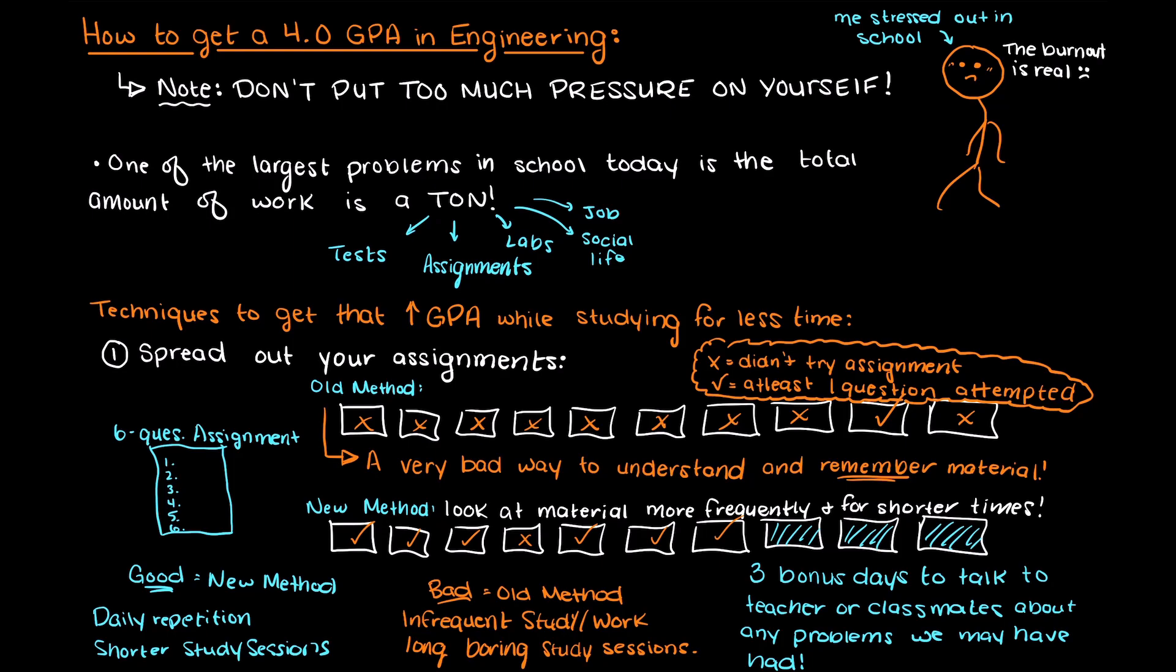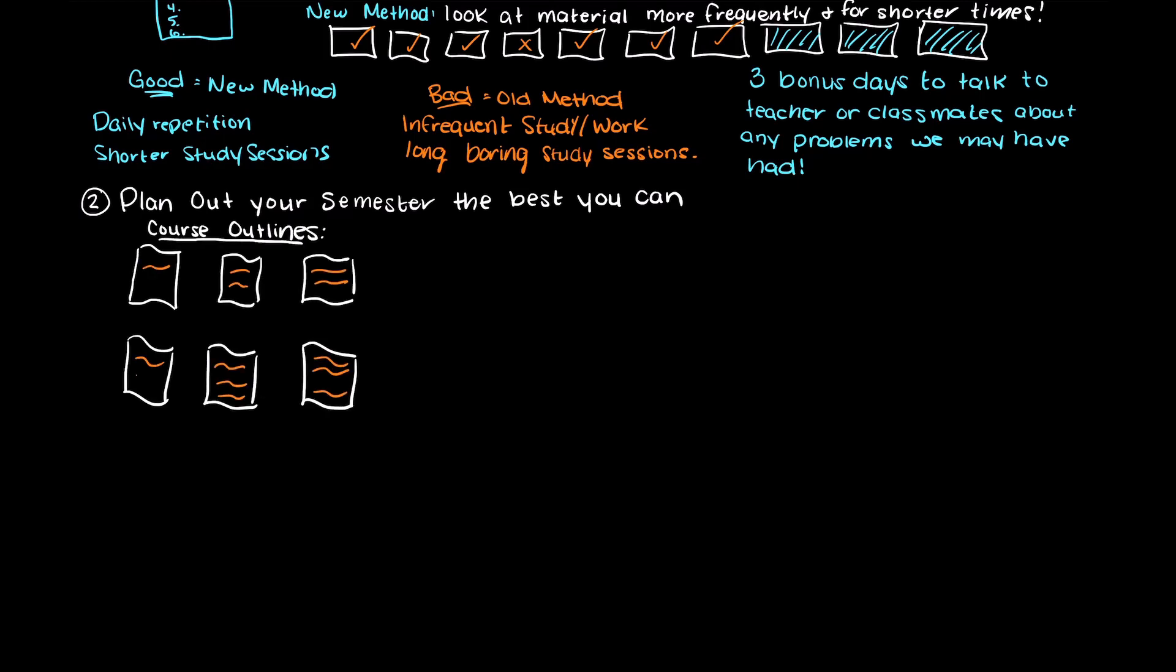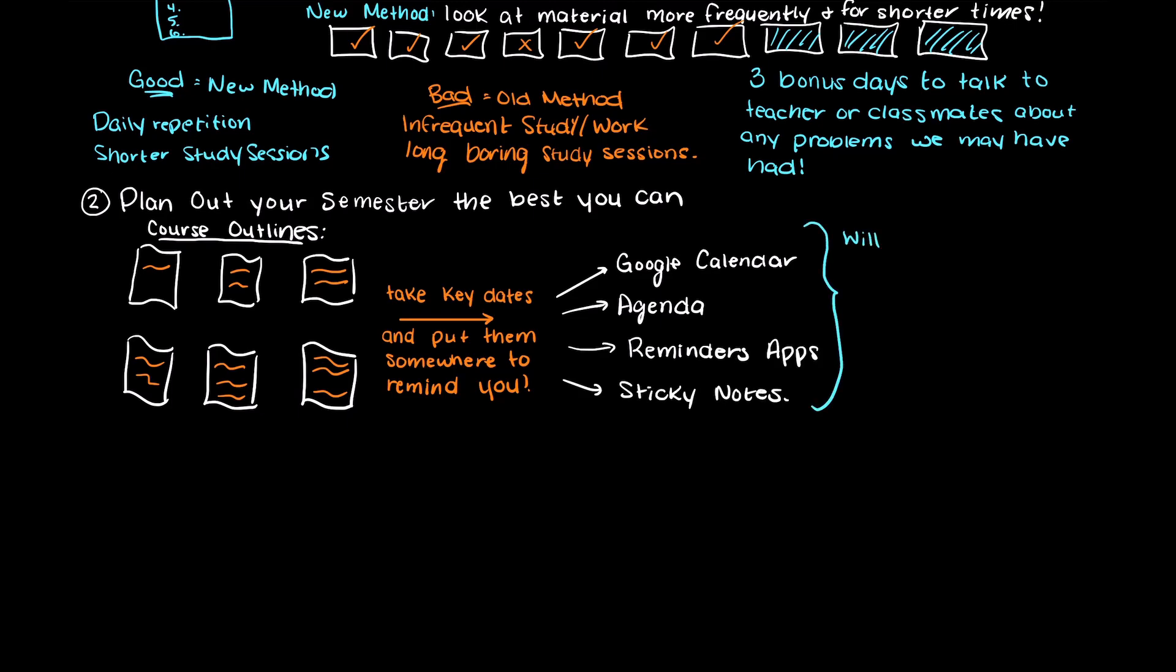The second piece of advice I have is to plan out everything to the best of your ability. The way I began every semester in college is going through all of my course outlines and highlighting all the key dates. So all test dates, due dates, assignments, labs, highlight everything. Then you're going to take all these dates and put them in your google calendar, an agenda, reminders in your phone, or really anything that will remind you in advance that you have something important coming up.